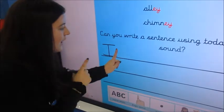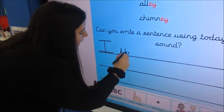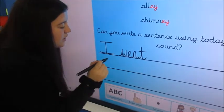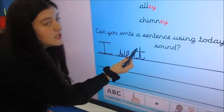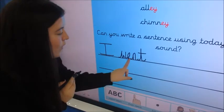My I sits on the line. Finger space. I went. W-E-N-T. Went. Look at my T, look how tall it is, it's taller than my other letters. I went.